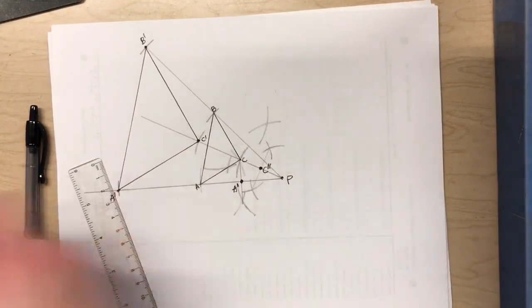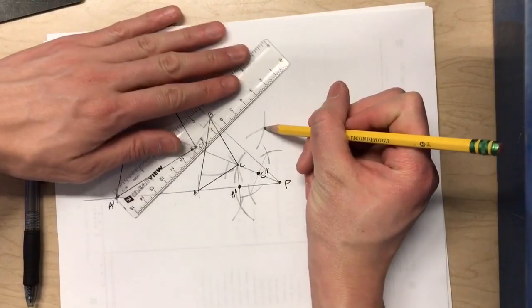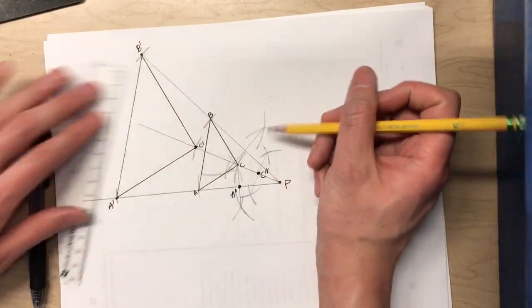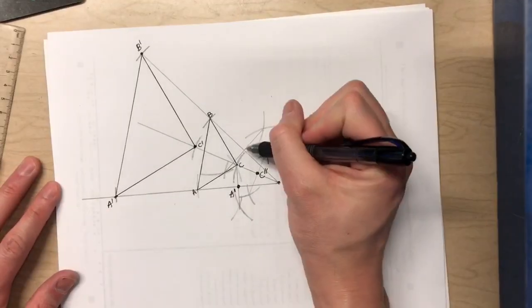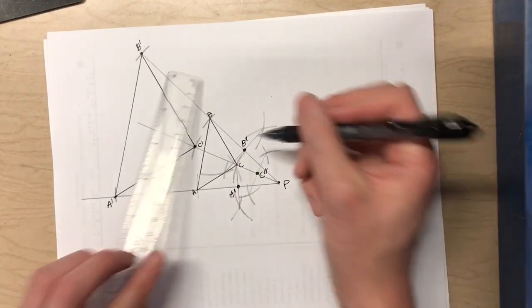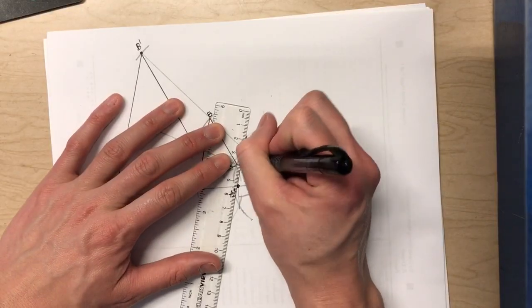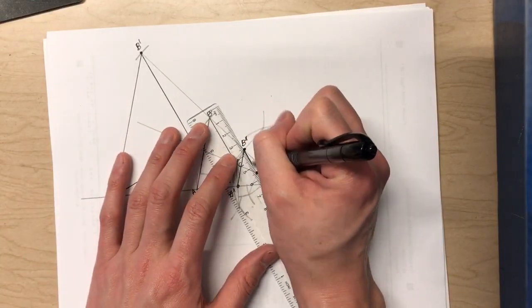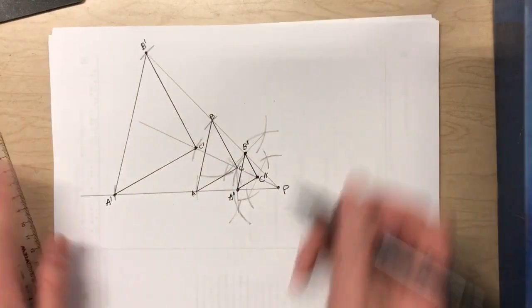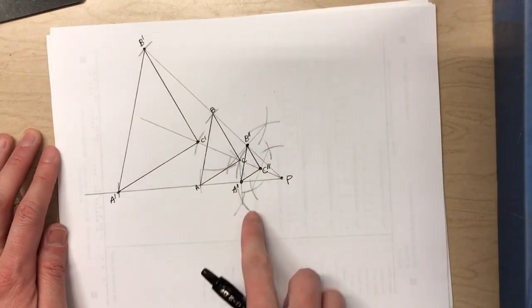And then finally for P to B. There and there. Perpendicular bisector. It gets a little messy with all the perpendicular bisectors, but there's the midpoint. B double prime. And so if I connect up those points, there's my new dilated triangle.